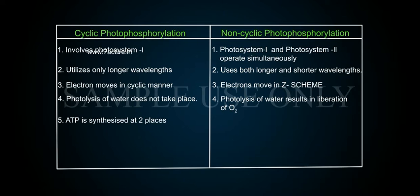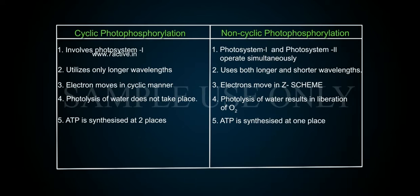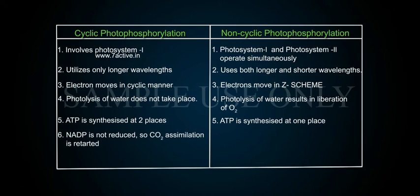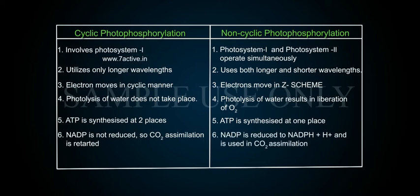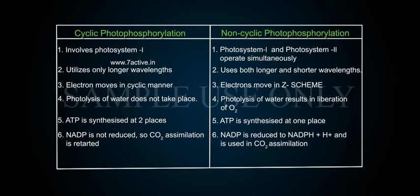Point 5: In non-cyclic, ATP is synthesized at two places, whereas in cyclic, ATP is synthesized at only one place. Point 6: In cyclic photophosphorylation, NADP is not reduced, so CO2 assimilation is retarded, whereas in non-cyclic, NADP is reduced to NADPH + H+ and is used in CO2 assimilation.